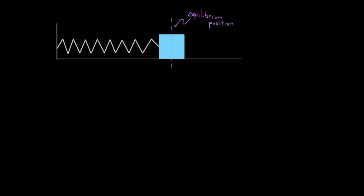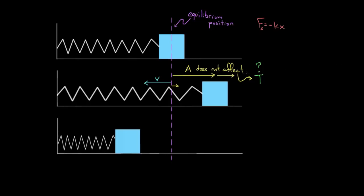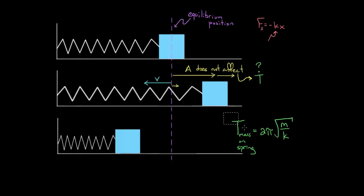So what does affect the period? Let me give you the formula. The period of a mass on a spring is equal to two pi times the square root of the mass divided by the spring constant k. That is the same spring constant from Hooke's Law and from the energy formula for a spring — the same spring constant all the way through.